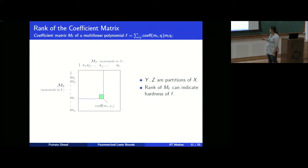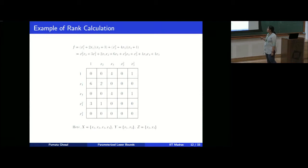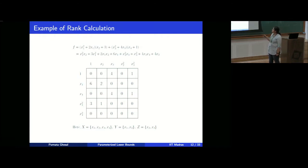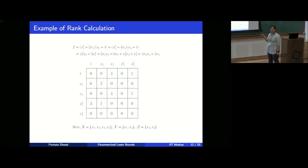This measure was defined by Raz. As an example, we take a polynomial and divide the variable set {x1, x2, x3, x4} into y = {x1, x4} and z = {x2, x3}. We construct the matrix where columns are monomials in z, rows are monomials in y, and the entry corresponding to a monomial — say x1·x2 — is the coefficient 2. Omitting rows and columns that are all zero, this matrix has its first and third rows the same and the second row is a multiple of the fourth row, so it has rank 2.